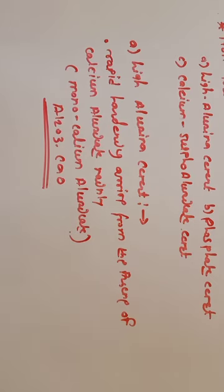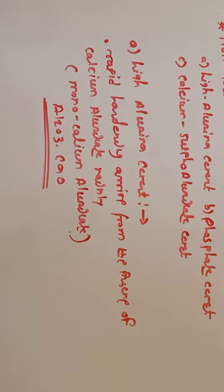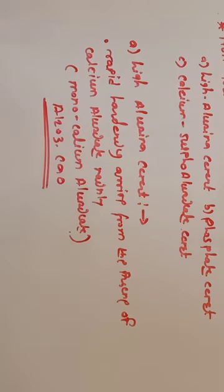These are the important characteristics of high alumina cement. In the next lecture we will discuss the second non-Portland cement, which is phosphate cement. You should find out more properties, how these cements are formed, their uses, and commercial examples of high alumina cement, phosphate cement, and calcium sulfo-aluminate cement. Thank you.